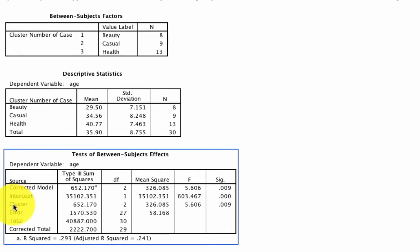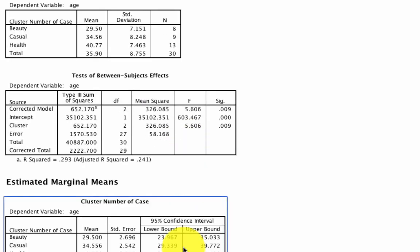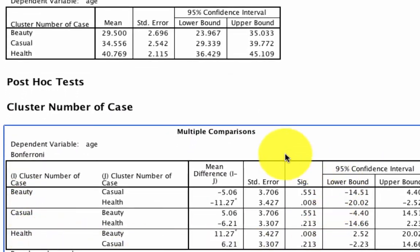And so first things first, we find that cluster has an overall effect, meaning that at least one cluster differs from one other cluster in terms of the age of the individuals in that group. If we scroll down to our Bonferroni test, we see that the beauty category differs from the health category, but the beauty category does not differ from the casual category. In fact, the only thing that's different is beauty versus health.